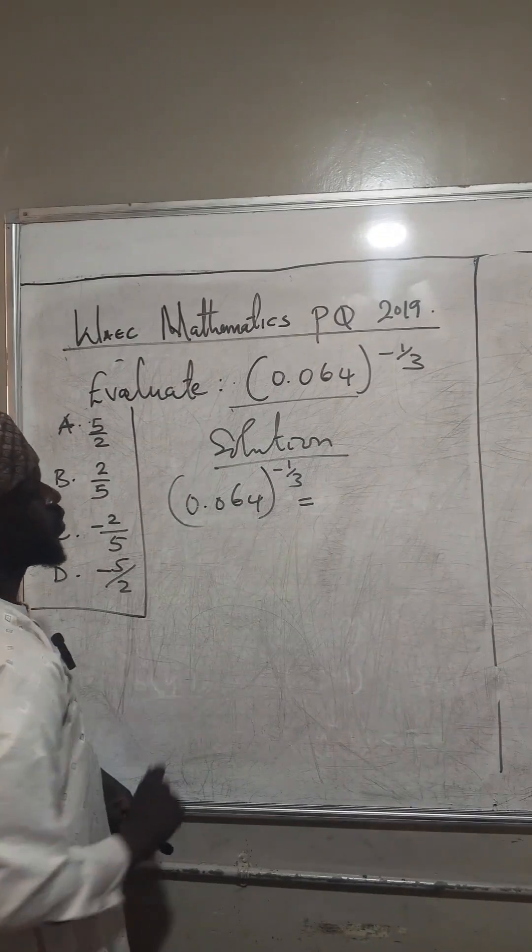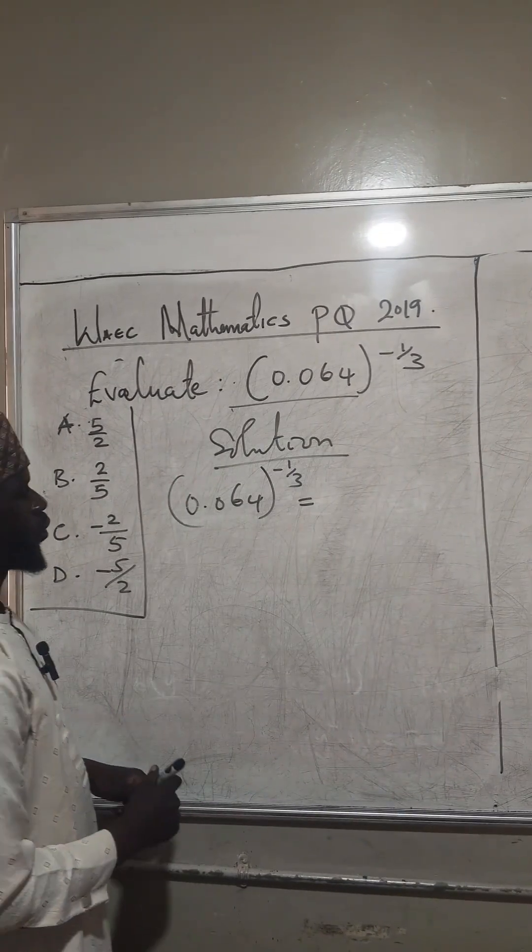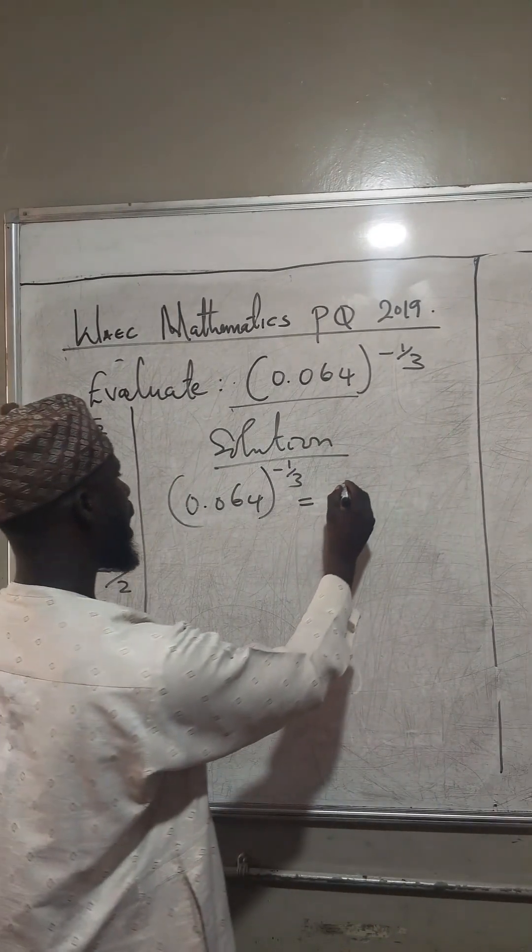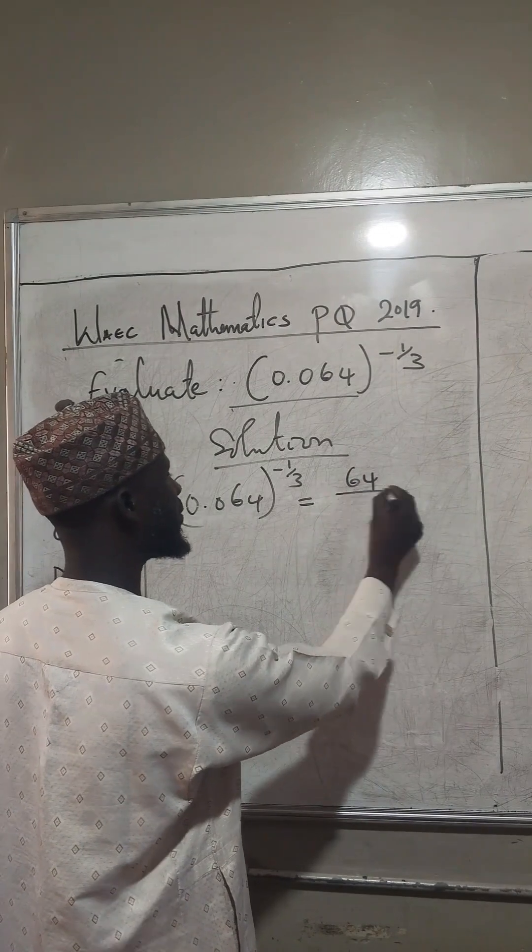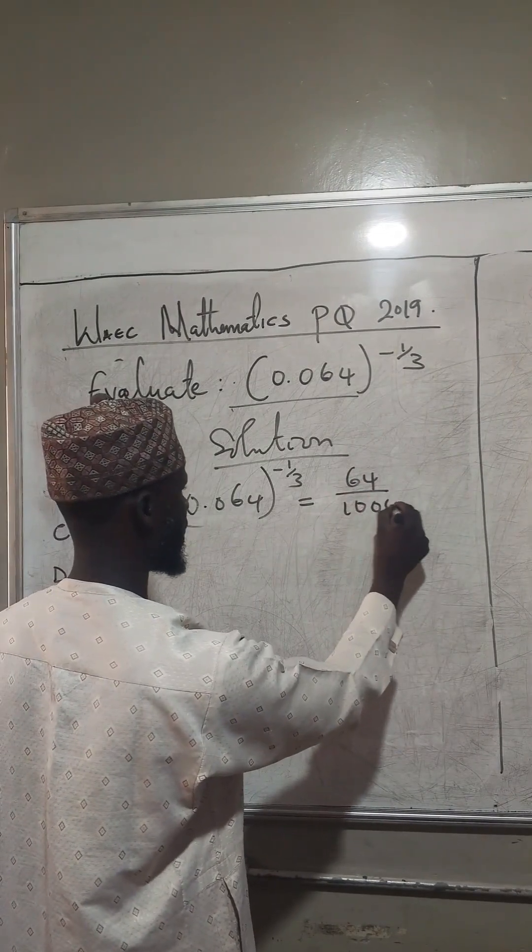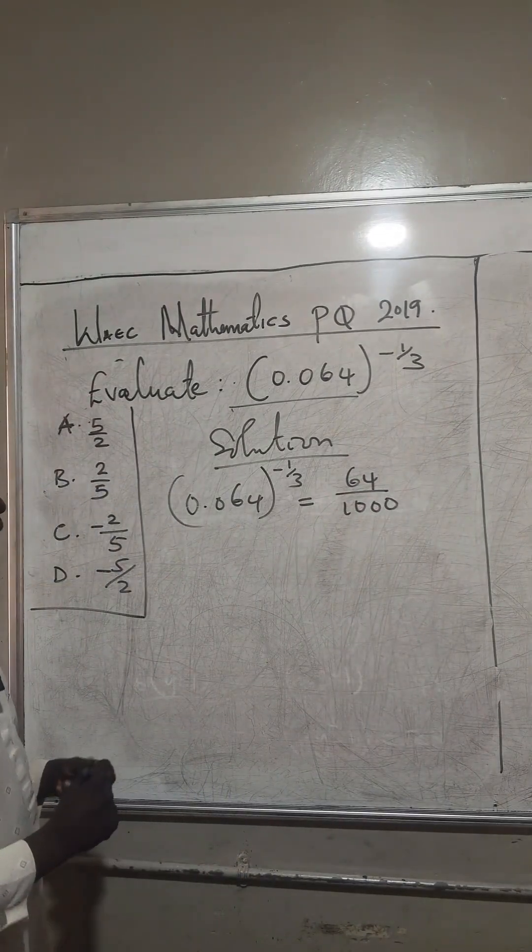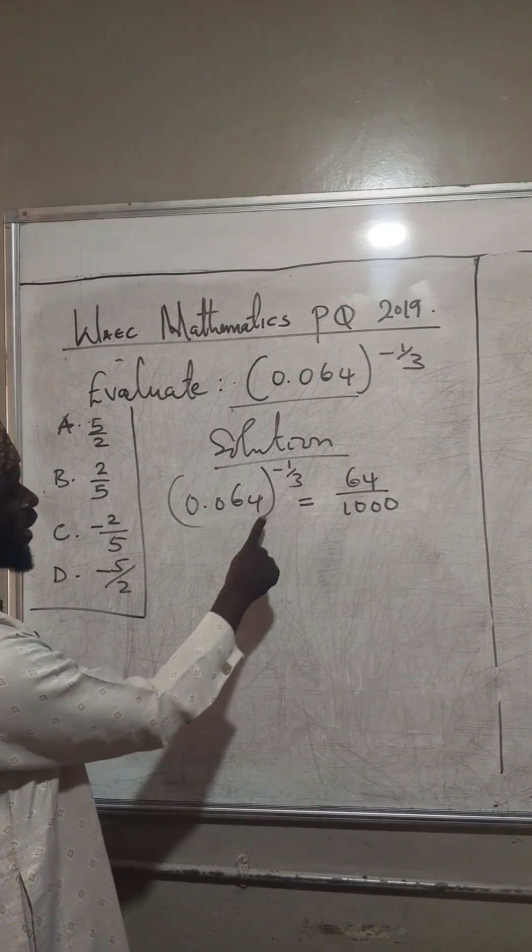And for this decimal, 0.064 is equivalent to 64 divided by 1,000. Because how many places? 1, 2, 3. So it's divided by 1,000.